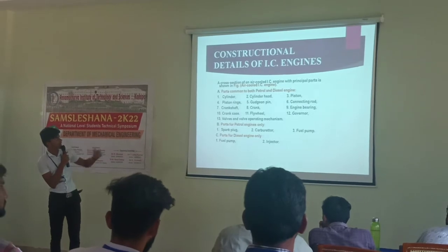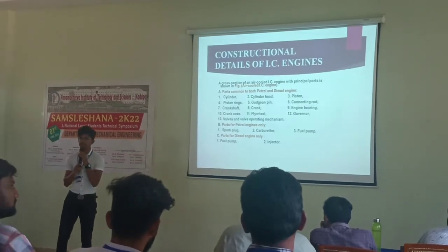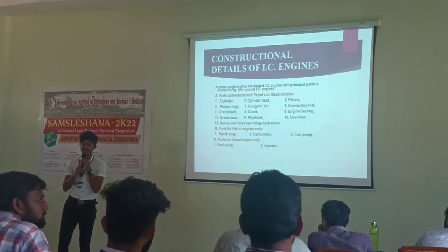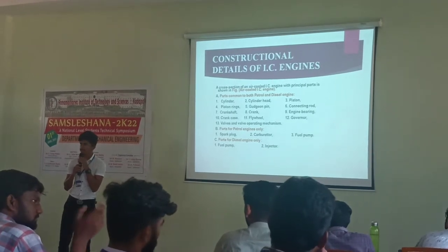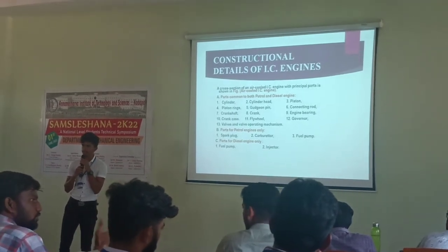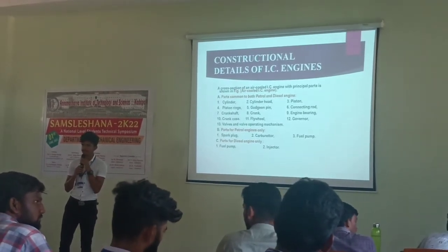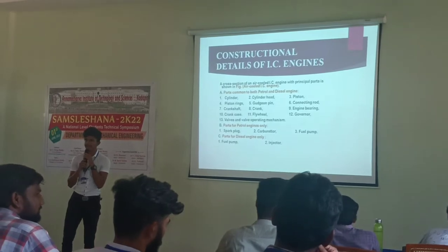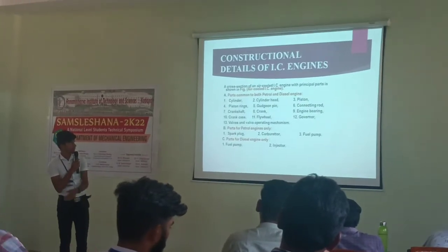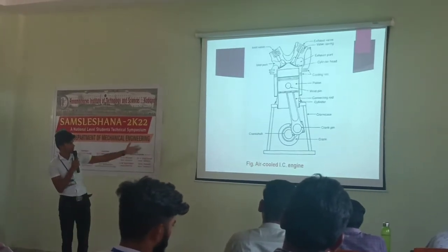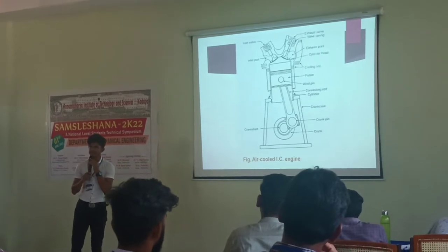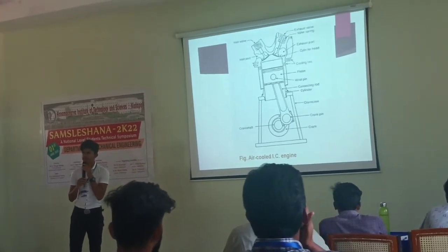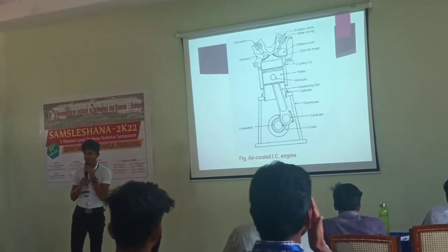These are the construction details and parts of the internal combustion engine. It has cams, camshaft, connecting rods, inlet valves and outlet valves, pulleys, connecting wheels, flywheels, and cover nets. This is the air-cooled IC engine in which cooling takes place by using air.